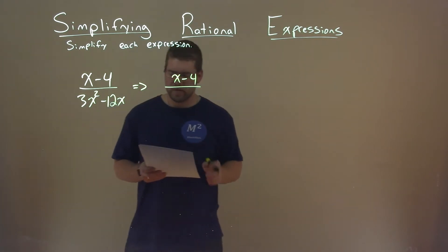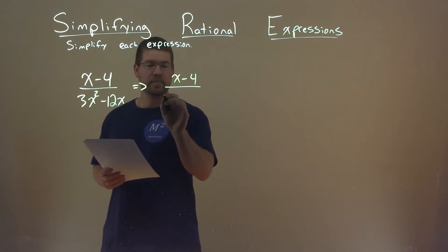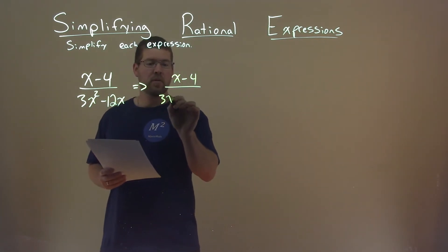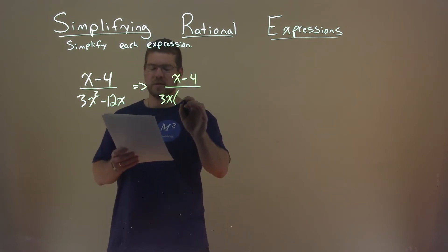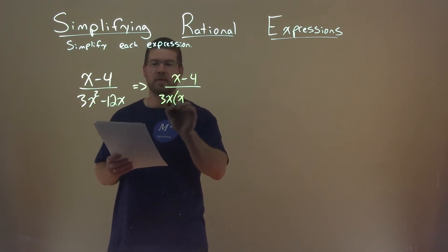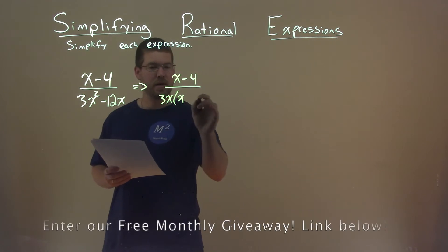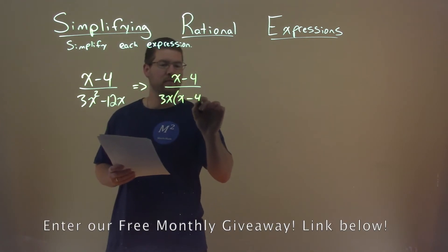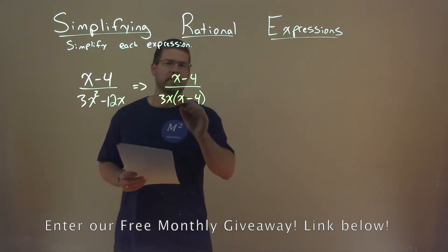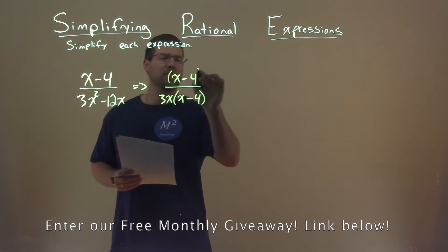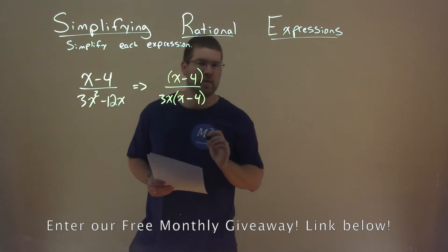The denominator, though — I can pull out a 3x here. 3x goes into both parts, and so what I'm left with is just an x. And then 3x goes into minus 12x four times, so minus 4 here. And hopefully you can see something — this x minus 4 can cancel each other out.